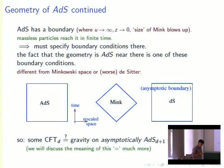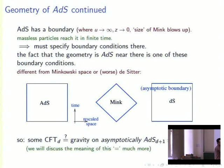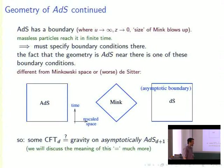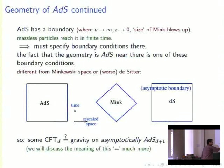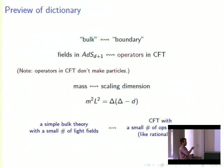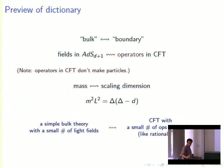AdS is different from other maximally symmetric spacetimes: in Minkowski space, light rays reach a null boundary; in de Sitter space you just wait and all your friends accelerate away — it's pretty depressing. I want to preview some ingredients in the dictionary between the CFT and gravity in asymptotically anti-de Sitter space. I'll refer to the gravity theory as 'the bulk' and the CFT as 'the boundary.' The basic element of the dictionary is that fields in anti-de Sitter space correspond one-to-one to operators in the CFT.